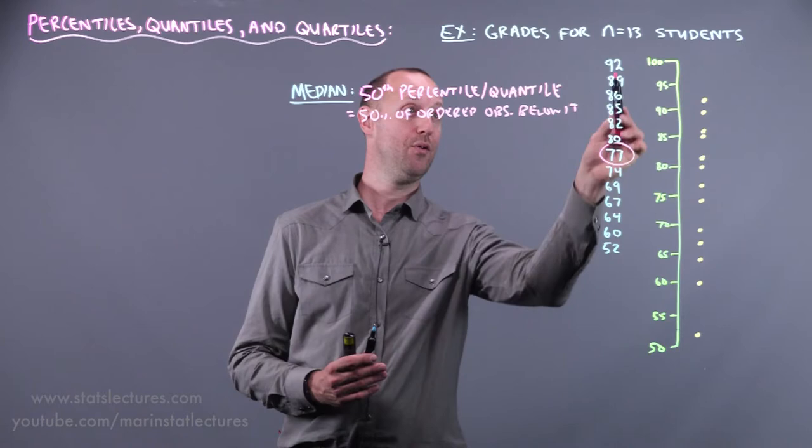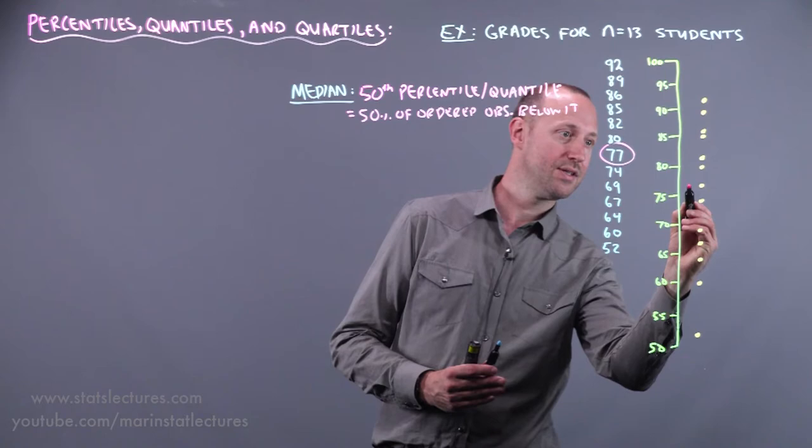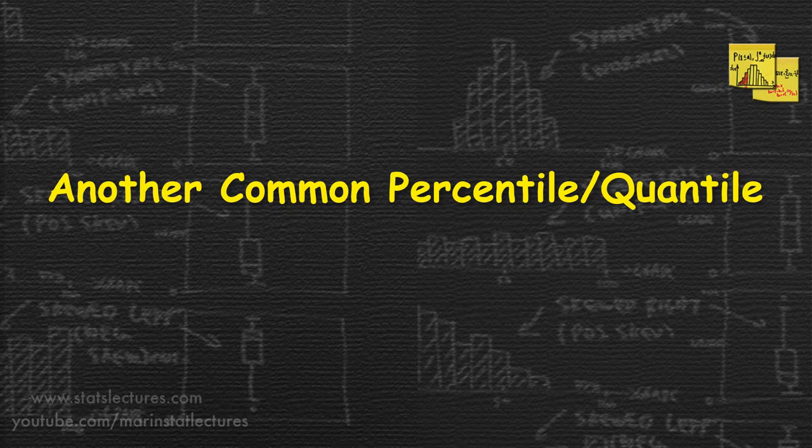If you look at it here, the value of 77 has 1, 2, 3, 4, 5, 6 below and 6 above. So this is the value that cuts the data set in half. 50% below 50% above. So that's looking at this right here. Half of it below, half of it above.